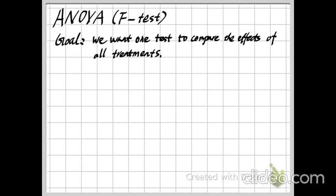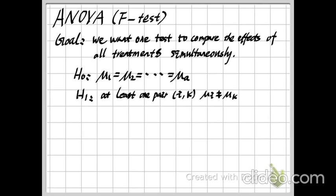We also call this ANOVA. First, we need to write down our null hypothesis and alternative hypothesis H1. Because we want to check all effects at the same time, H0 should be an equation: mu1 equals mu2 until mua, the sample mean for each treatment. For H1, we only need one of the elements to be different from the others — if even one pair is different, H0 fails.